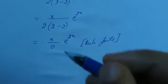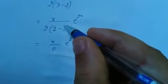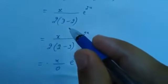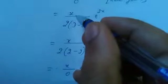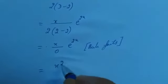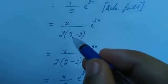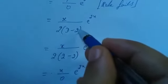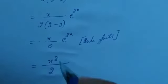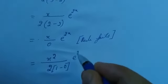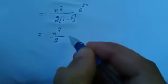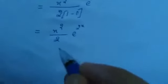Again, if the rule fails, we multiply the numerator by x once more and differentiate the denominator with respect to D again. Multiplying gives x squared in the numerator. Differentiating 2(D minus 2) with respect to D gives 2 into 1, which is 2. So this equals x squared by 2 into e raised to 2x. This is the particular integral.